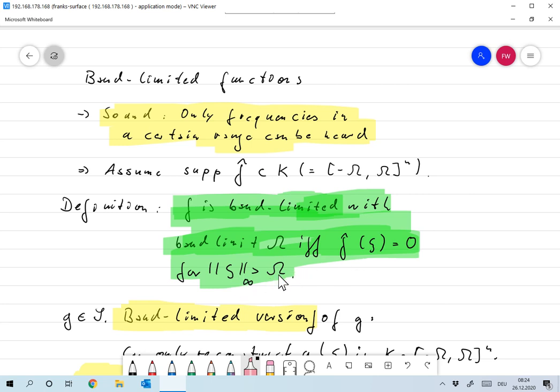We will also use slightly different definitions where we actually take the Euclidean norm here, but this is the definition of band limit. And again, if you don't like the notion of n-dimensional spaces here, just take n equals one and then you get exactly the sound definition back.